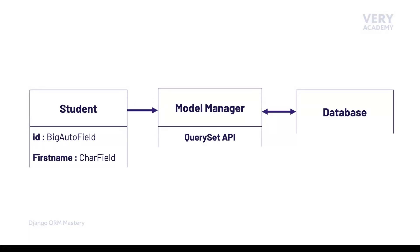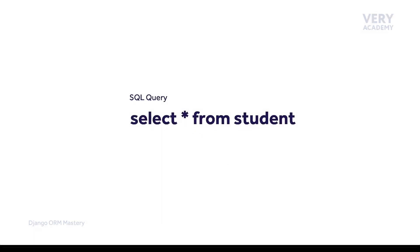Every time that we build a query within our Django application, we need to pass through or interface through the model manager to access the Query Set API tools. Let's take a look at that in action — first, let's remind ourselves of a typical SQL statement. Here we have a SELECT statement: we select the star, which refers to all fields and rows, from the student table. This is a typical SQL query.